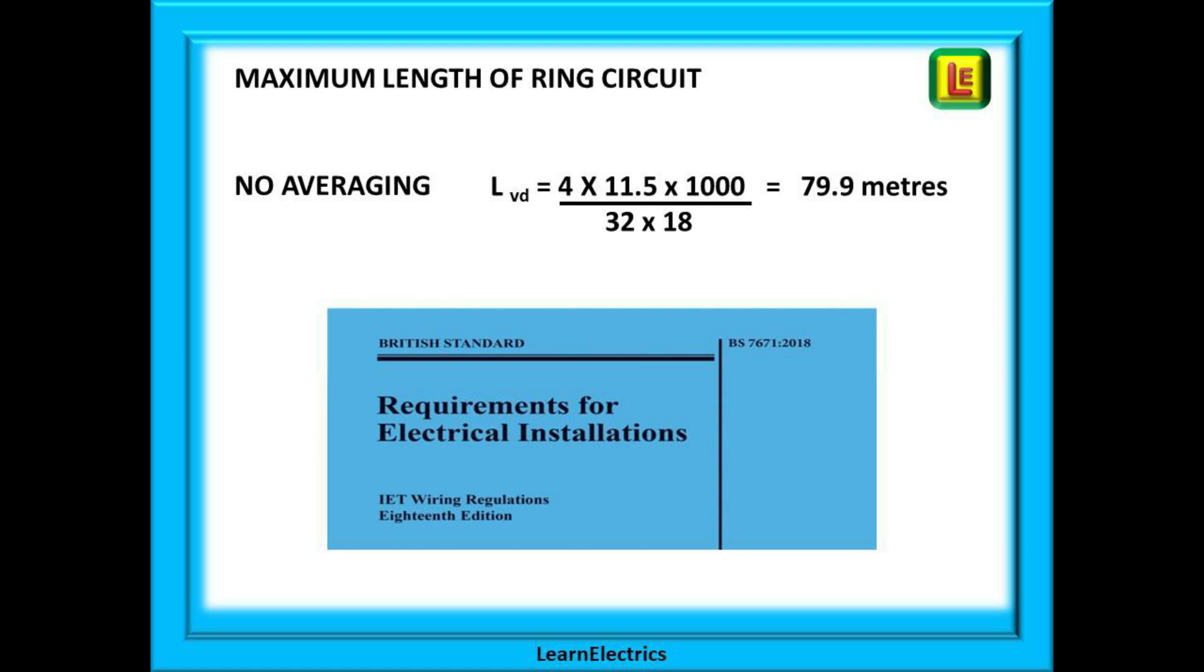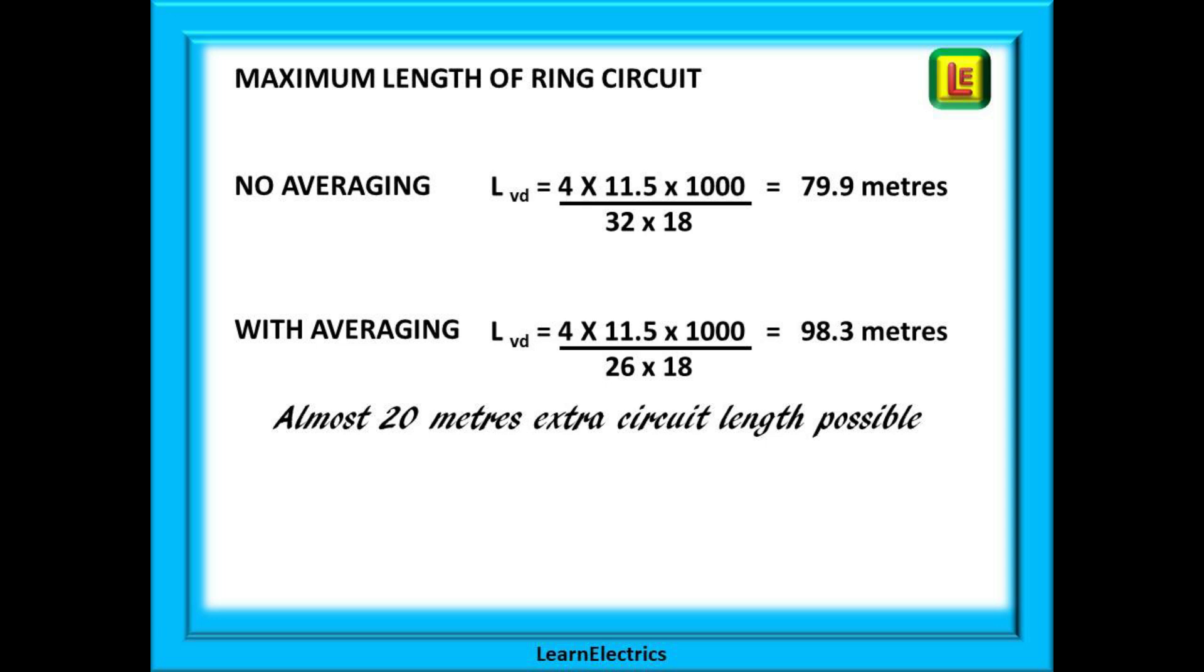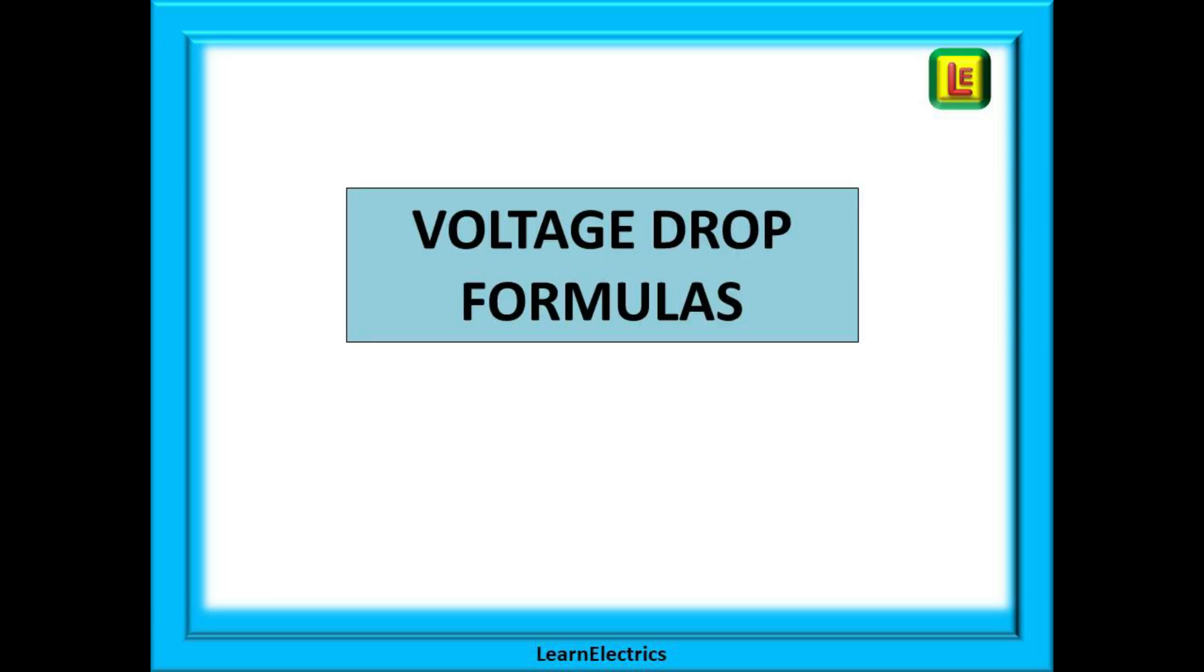We'll do the same calculation but this time with the average load current, the 26 amps that we calculated previously. 26 amps replaces the 32 amps and we have a maximum length this time of 98.3 meters. This is almost 20 meters extra circuit length possible, a 25 percent increase. Hopefully you can see the significant benefit to using averaged load currents to maximum load currents.